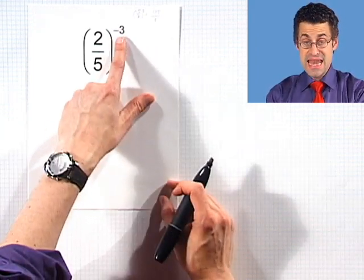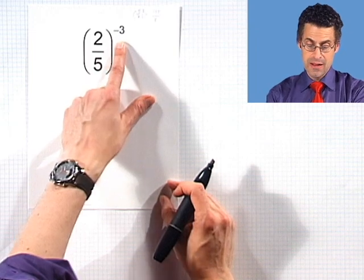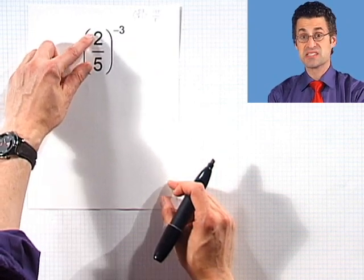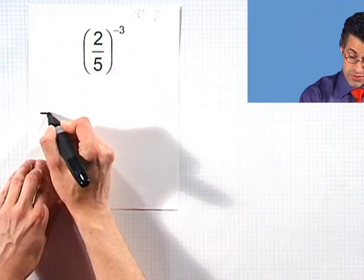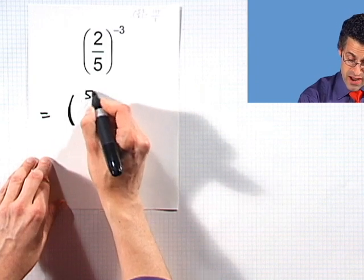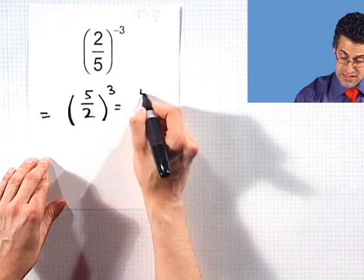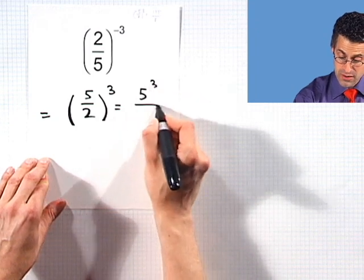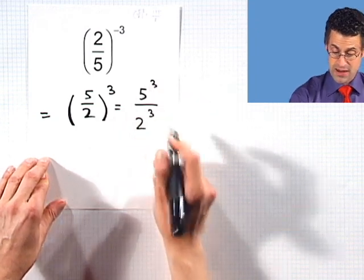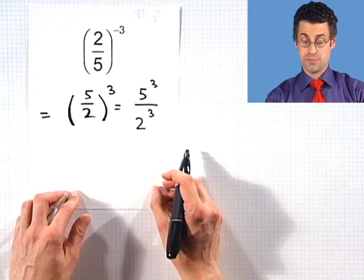That negative exponent tells me that I should be taking the reciprocal of the base. And so this actually equals 5 over 2 raised to the third power. So that's 5 to the third power divided by 2 to the third power using one of the properties of exponents.